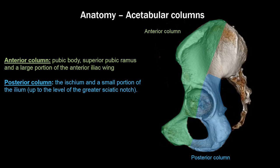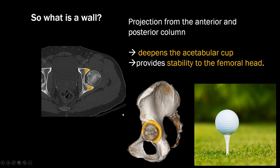The anterior column involves the pubic body, the superior pubic ramus, and a large portion of the anterior iliac wing. The posterior column involves the ischium and a small portion of the ilium up to the level of the greater sciatic notch. A wall is just a projection from the anterior and posterior column that deepens the acetabular cup and provides stability to the femoral head.